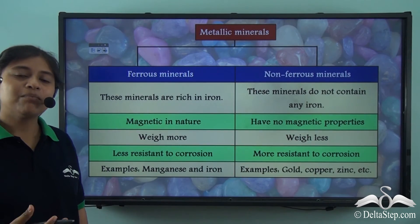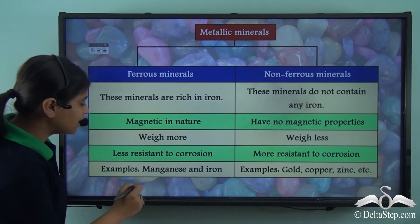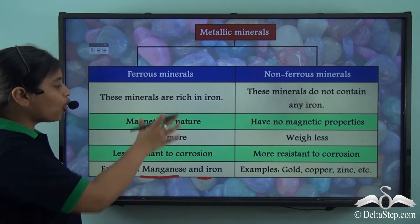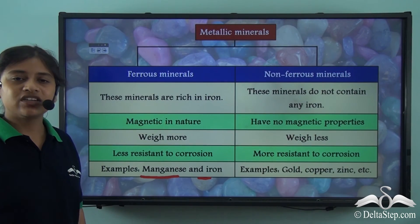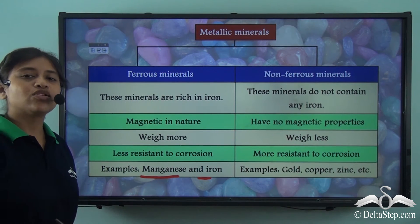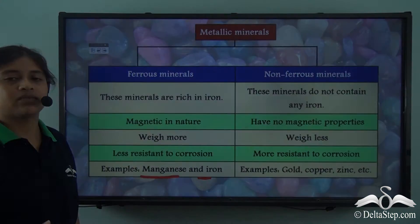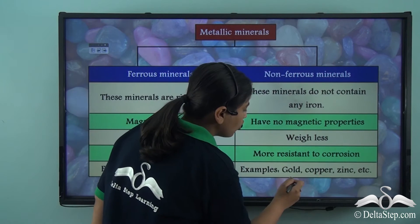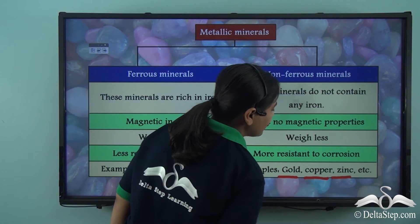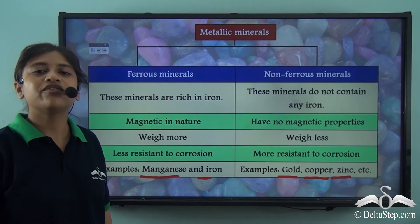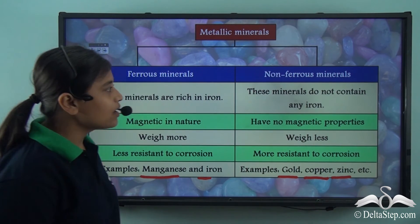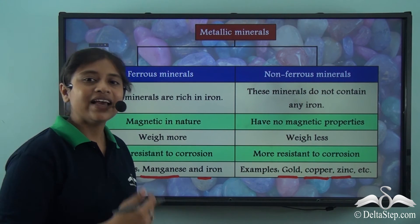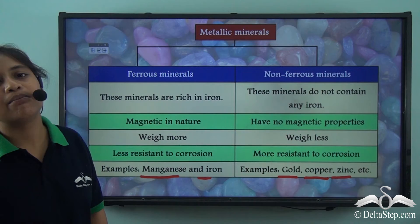Common examples of ferrous metallic minerals are manganese and iron, which showcase all these properties — being magnetic in nature, containing iron, and being less resistant to corrosion. Examples of non-ferrous metallic minerals are gold, copper and zinc, which do not contain any iron, are more resistant to corrosion, weigh less and show no magnetic property.